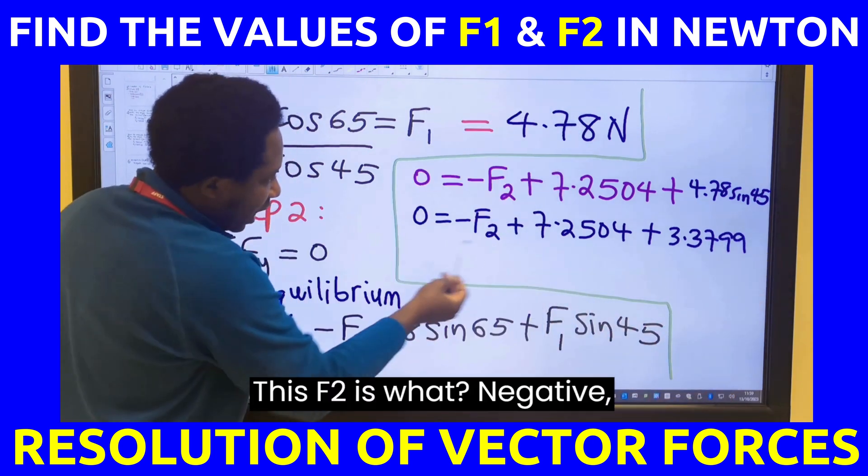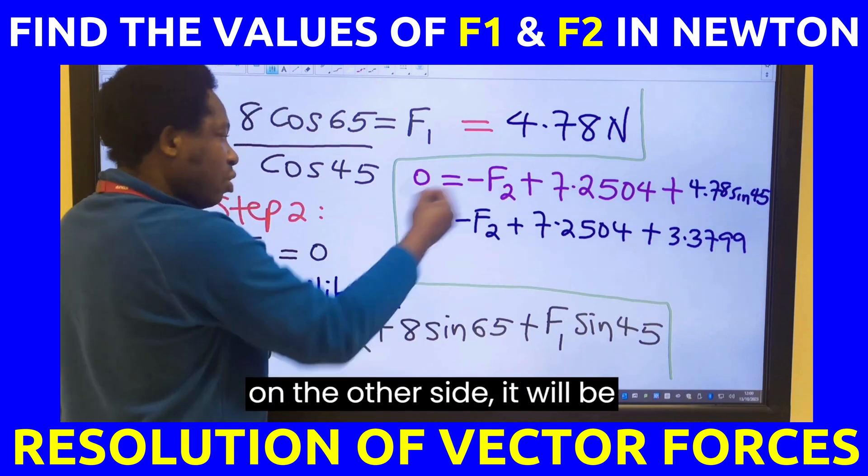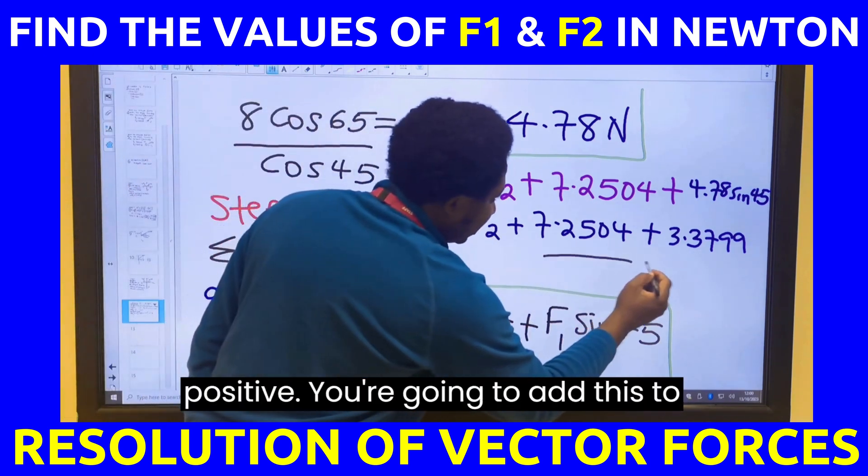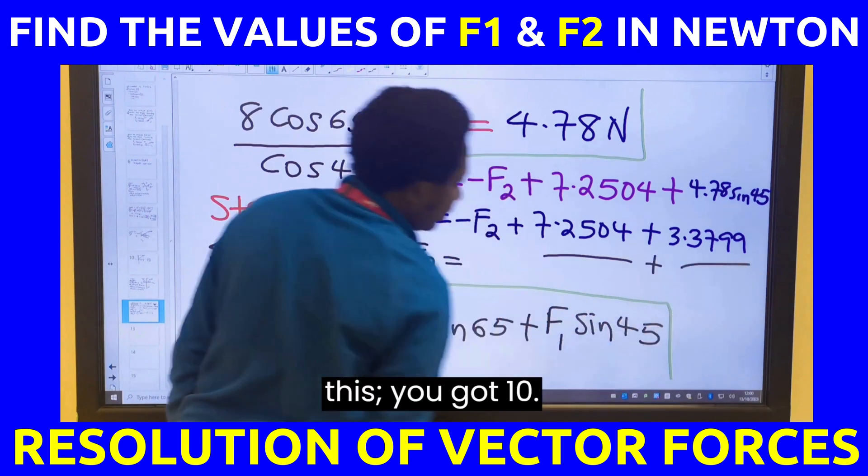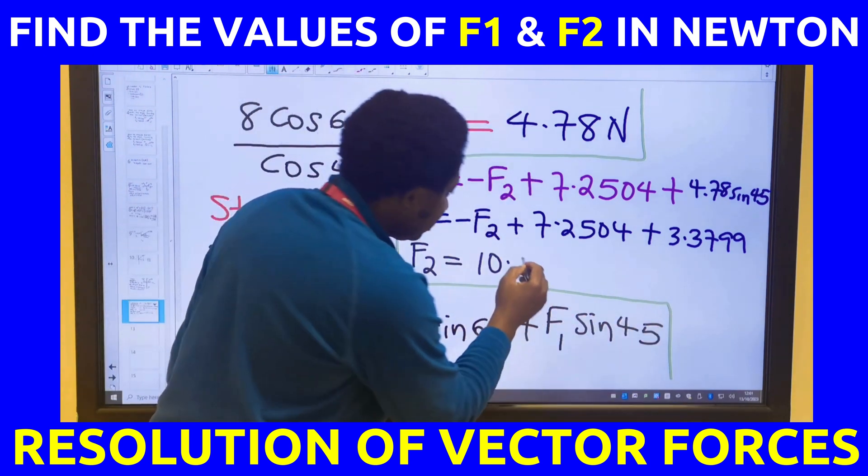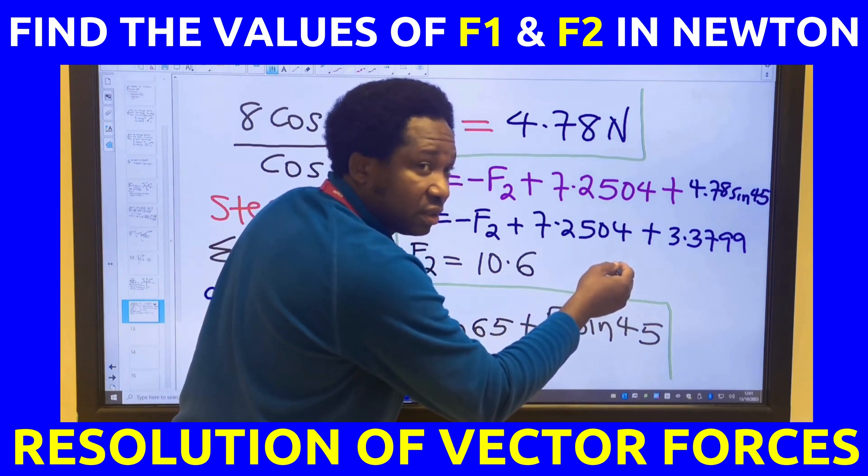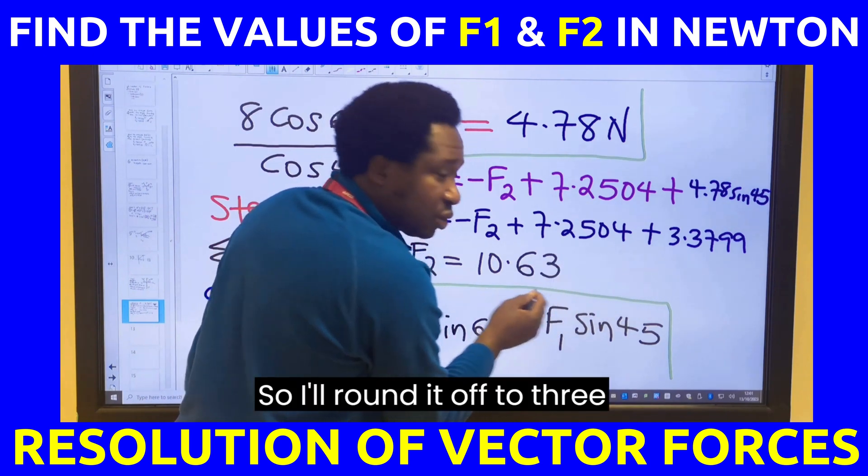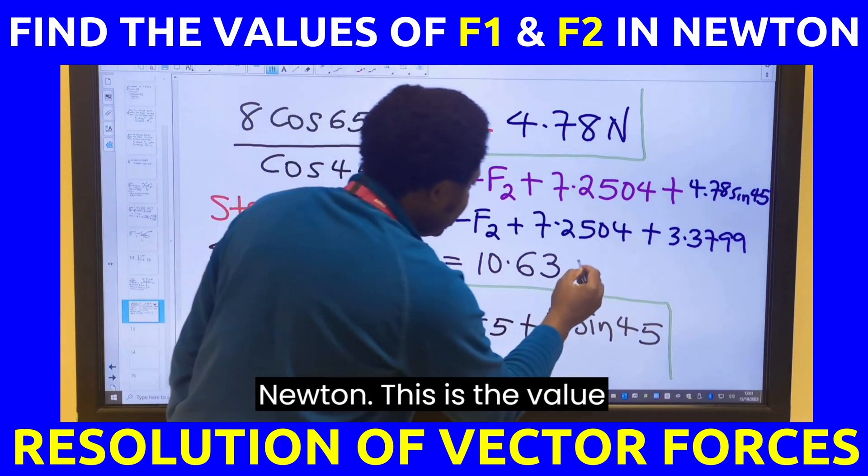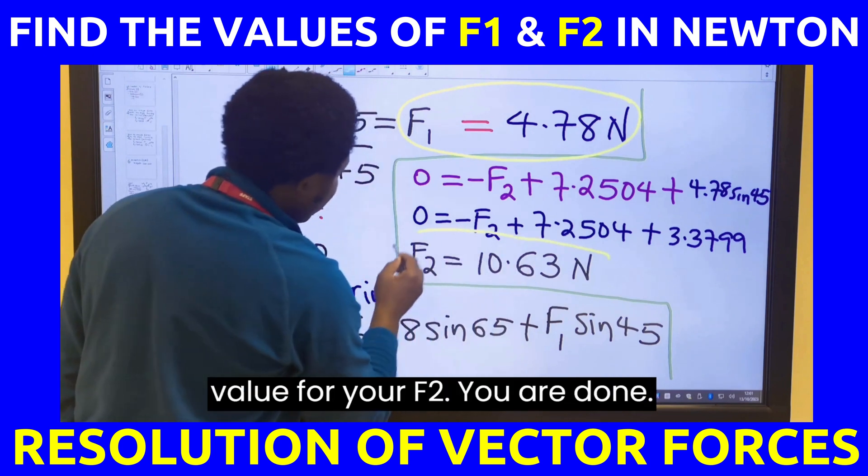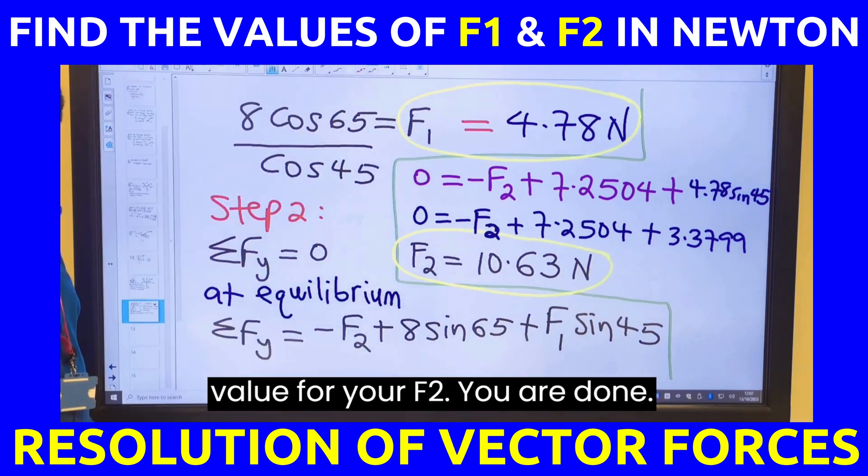This F2 is negative. On the other side, it will be positive. You're going to add this to this. You got 10.63. So I will round it off to 10.63 Newton. This is the value for your F1 and this is the value for your F2. You are done.